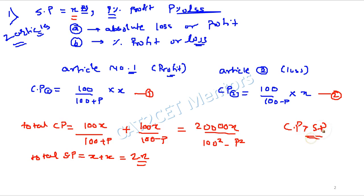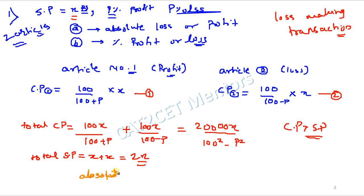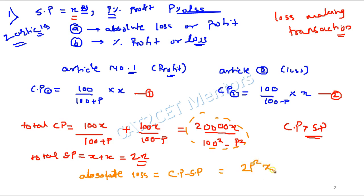Observing carefully, the cost price in this transaction is always greater than the selling price, so it will always be a loss-making transaction. The absolute loss is cost price minus selling price, which on rearranging equals 2p²X upon (100² minus p²). This is the formula for calculation of absolute loss.